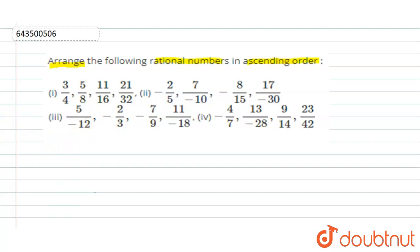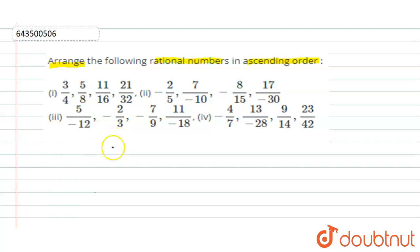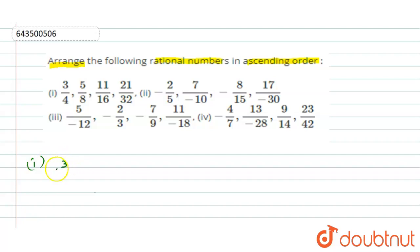First, we need to know what ascending order means. Ascending order means arranging numbers from lowest to greatest — we arrange them from the lower one to the greater one. The first question is: 3/4, 5/8, 11/16, and 21/32.